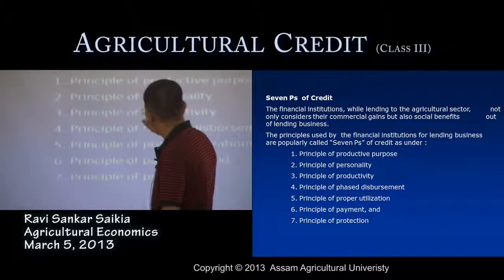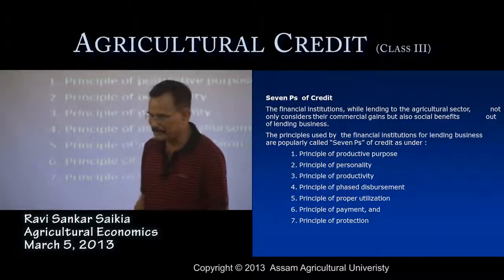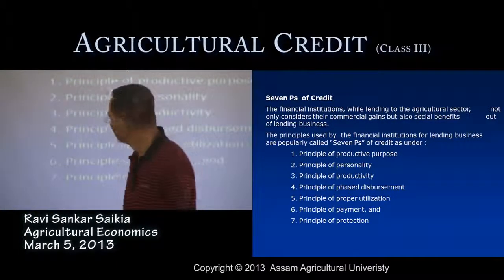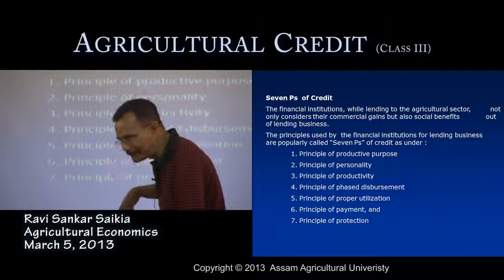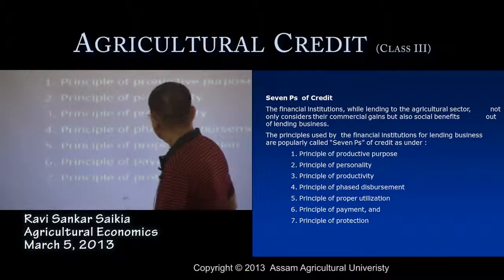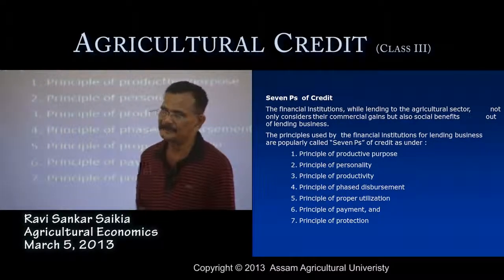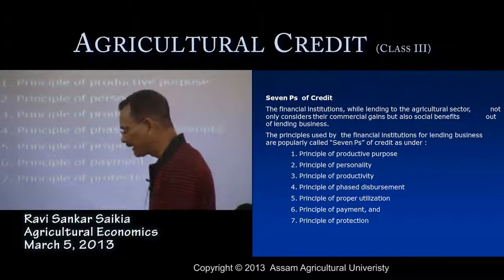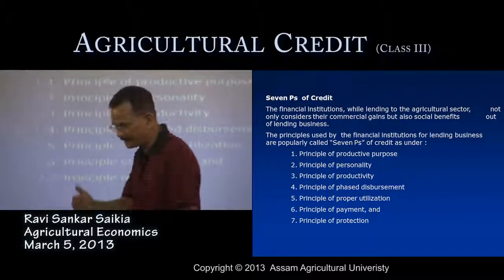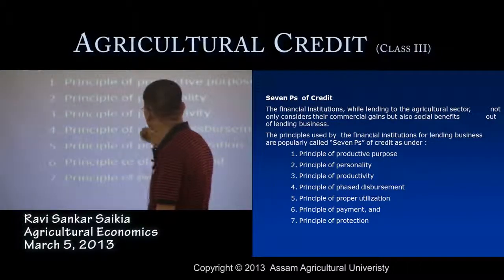The seven P's of credit are: first, the principle of productive purposes; second, the principle of personality; third, the principle of productivity; fourth, the principle of phased disbursement — generally followed by banking organizations to check the diversion of credit; and fifth, the principle of proper utilization.